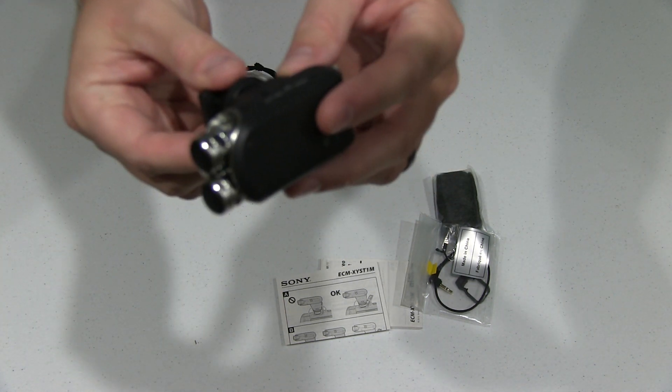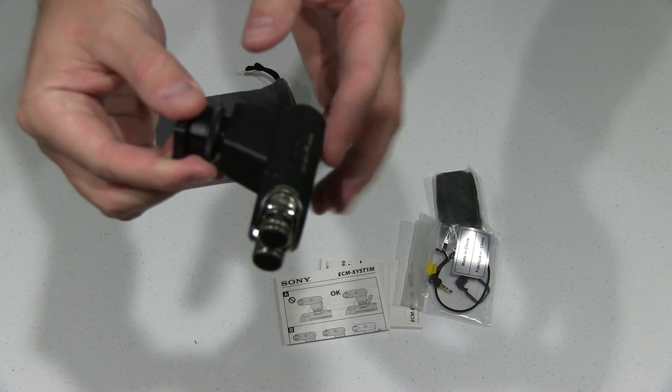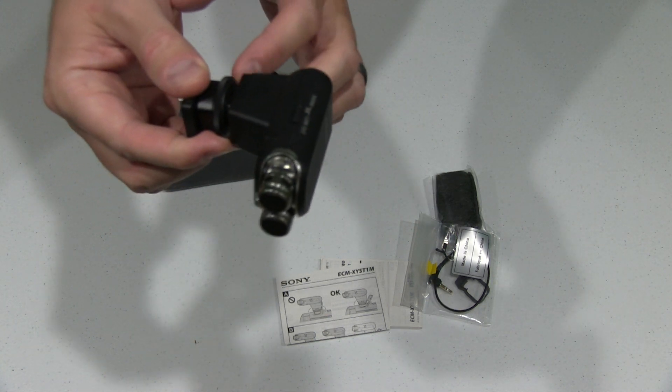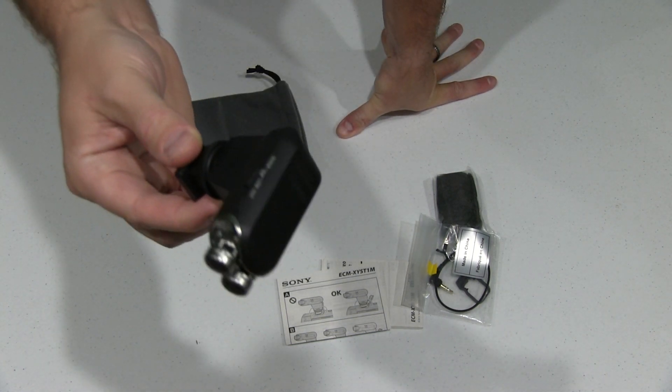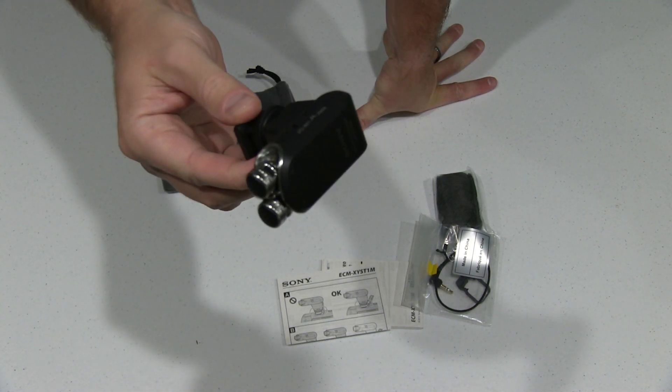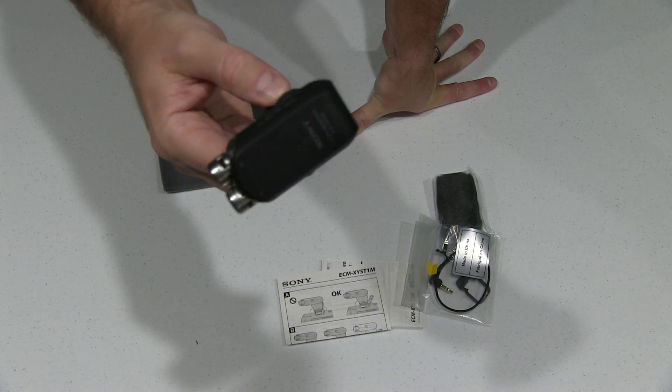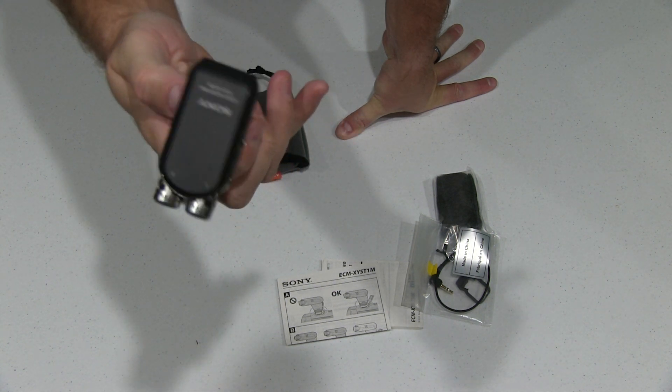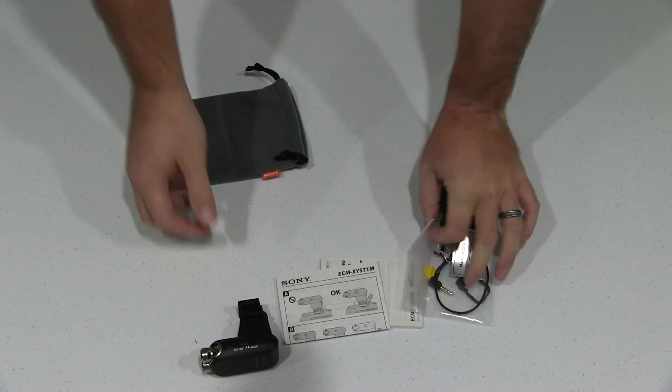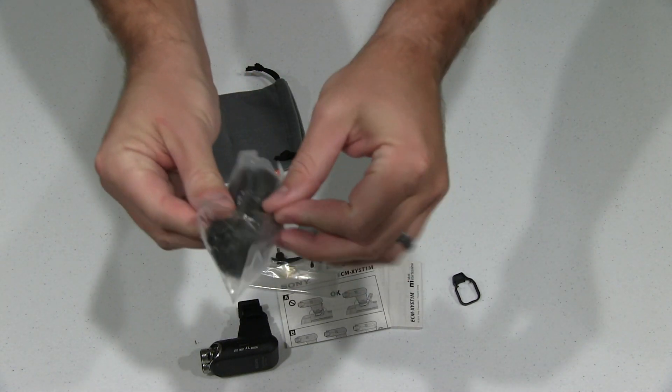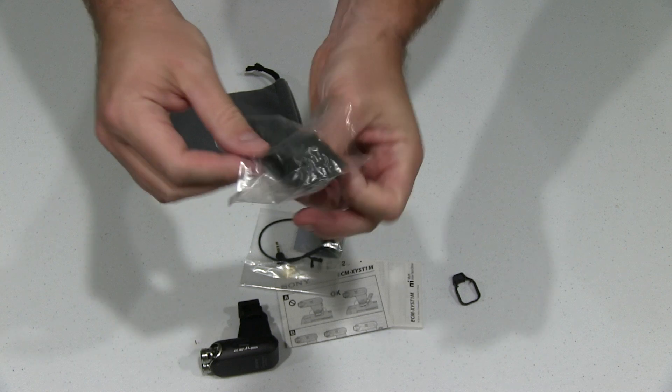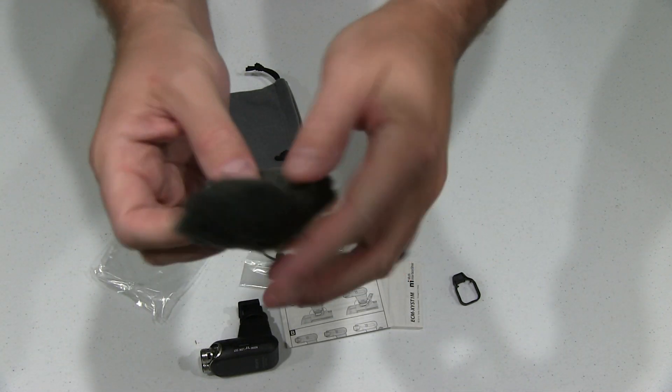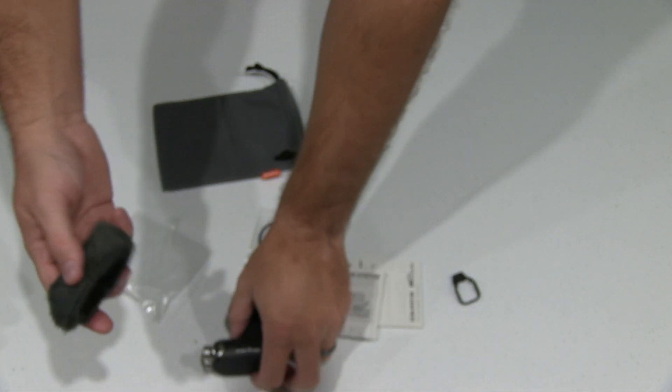It's kind of got dampening. You can feel it's kind of spongy right there, which is good to eliminate the audio distortion created by vibration when you're attached to a camera. And we've got the wind sock for filming in windy conditions.